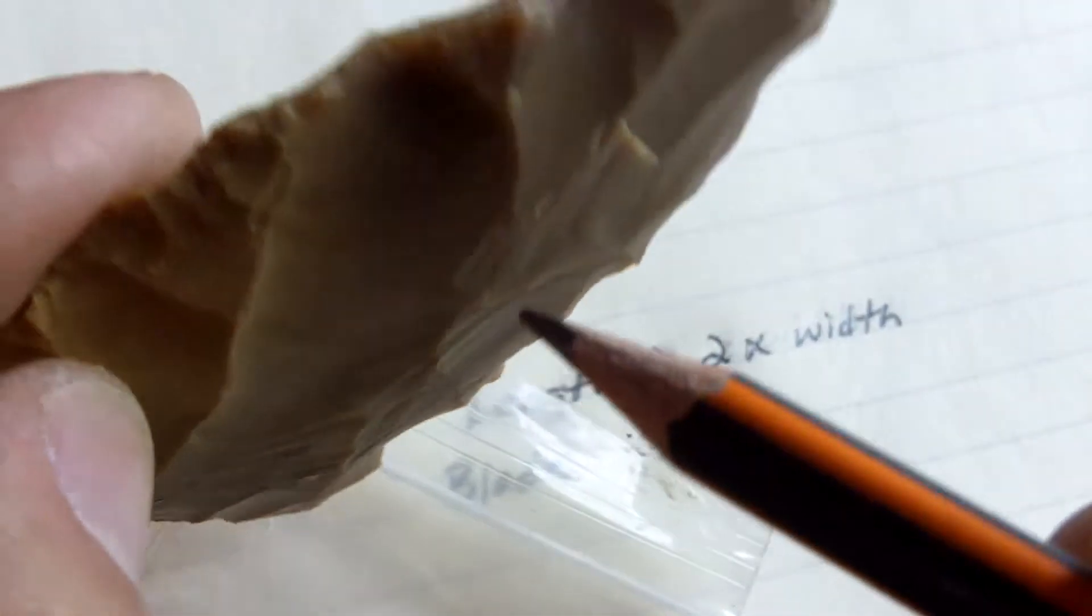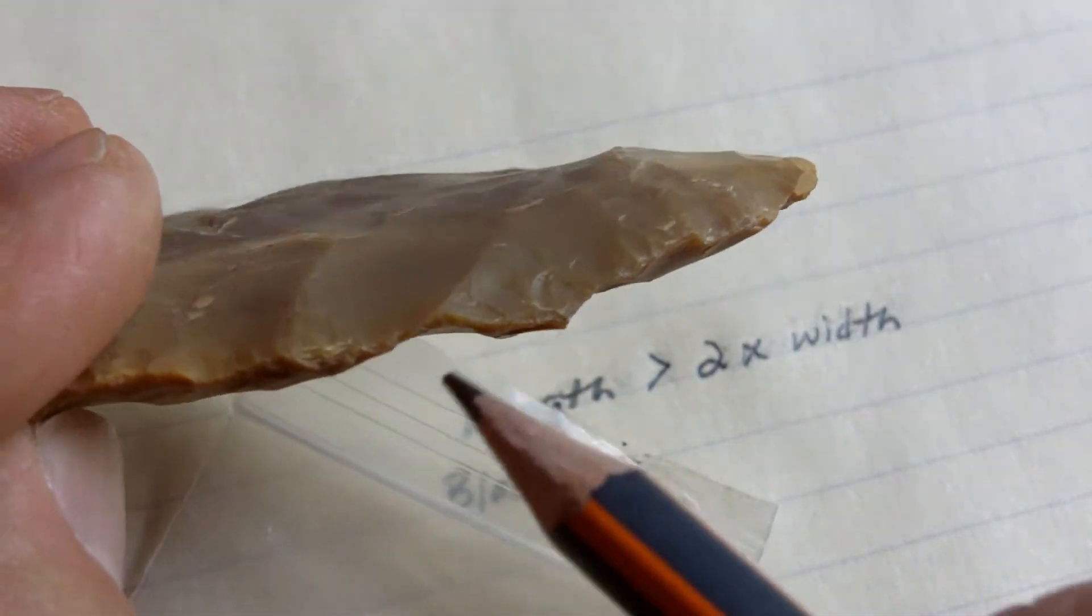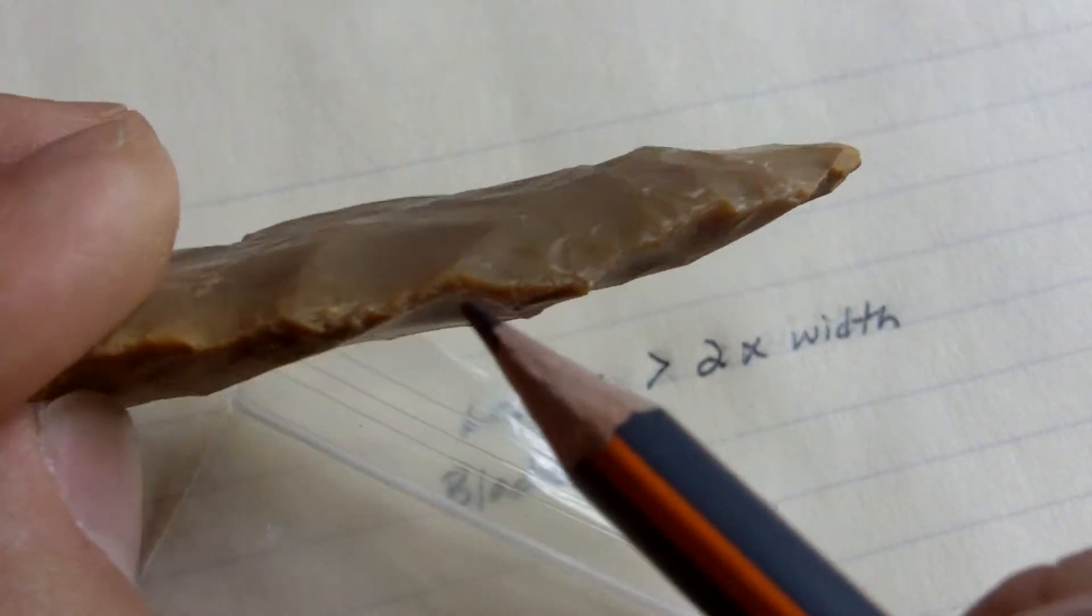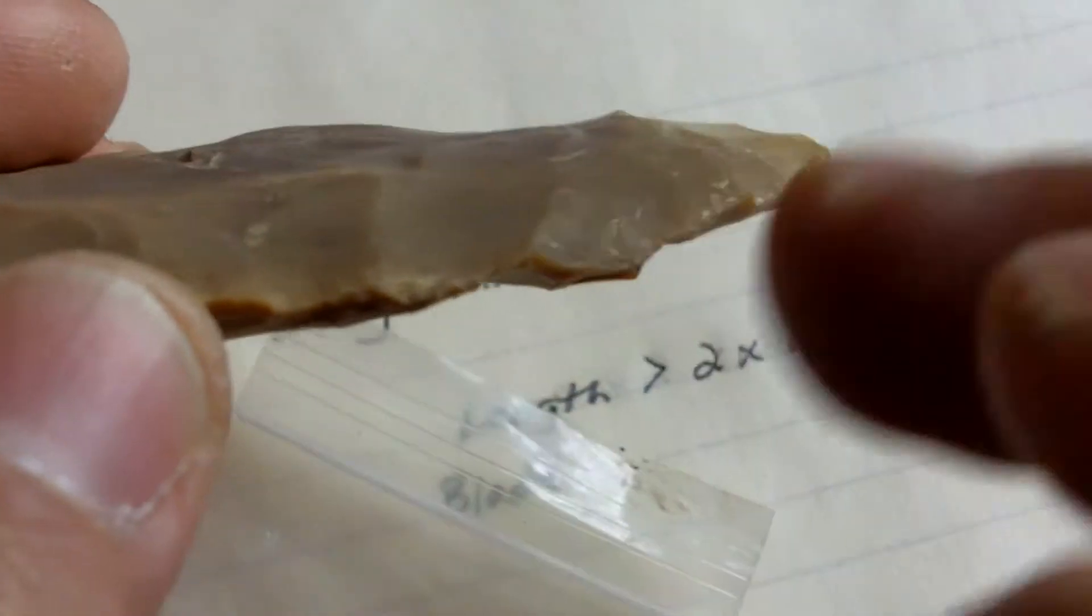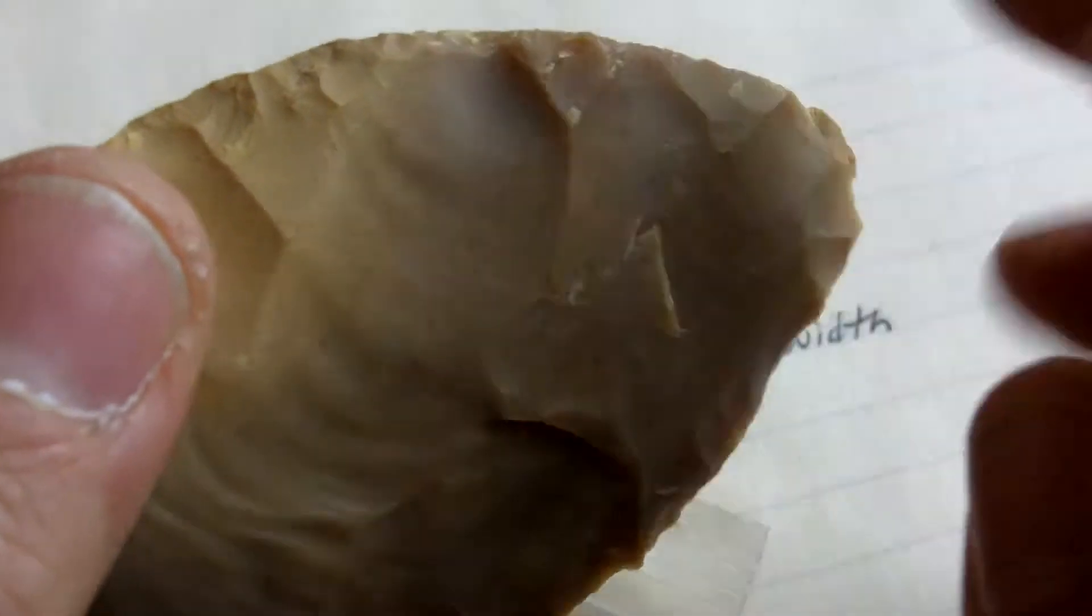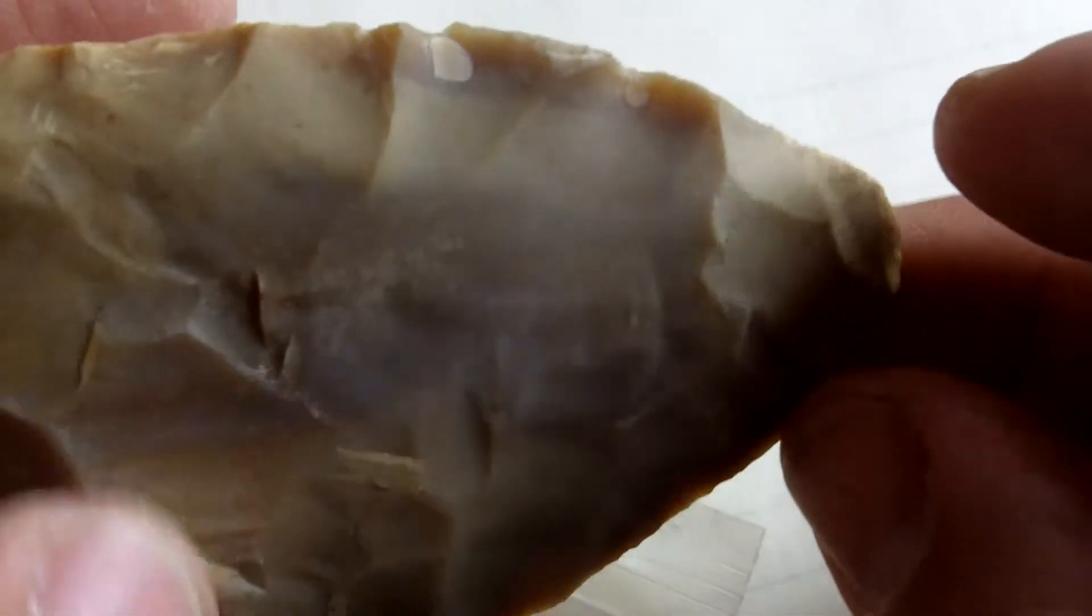And in order for me to run long flakes like this, I've got to blow apart, or blow off, a lot of the edge. It takes a pretty stout platform and a lot of material at the very beginning to run long flakes. So that's one thing to keep in mind.